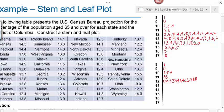For stem 13, arranging in order we have: 0, 1, 3, 4, 5, 5, 5, 6, 6, 6, 7, 7, 7, 8, 8, 9, 9.